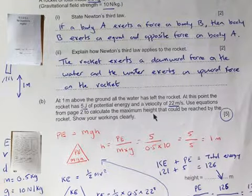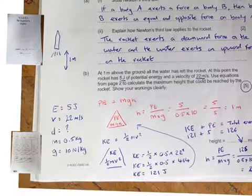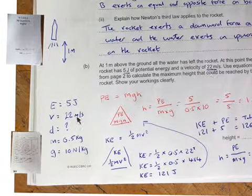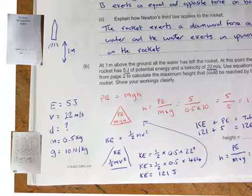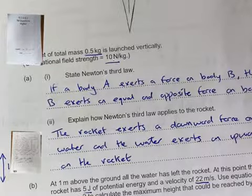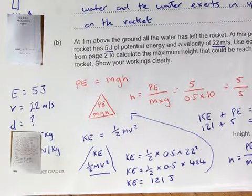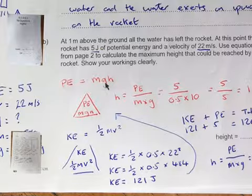From page 2 to calculate the maximum height that could be reached by the rocket. Show your workings clearly. You can see I've written down everything I know. My energy at this point is 5 joules, my velocity is 22, don't know my distance although it's given me one meter above the ground but I'll show you how we got there. It's got a mass of 0.5 which I got from up here and then a gravitational field strength of 10. Now initially I did it in red first, I'll just show you where you could potentially go wrong because you've got your mass, gravitational field strength, you've got a potential energy of 5 joules, so you'd be tempted to work this out for height.